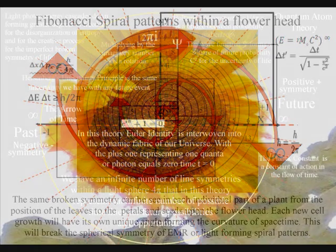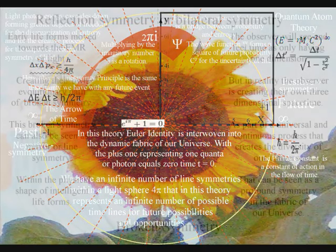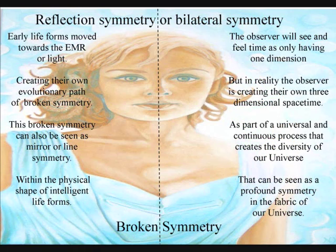We have an infinite number of line symmetries within a sphere. In this theory, this represents an infinite number of potential timelines for the evolution of life. Because life is an integral part of the physical universe, this line symmetry is even visible in the physical shape of intelligent life, forming left and right handedness.